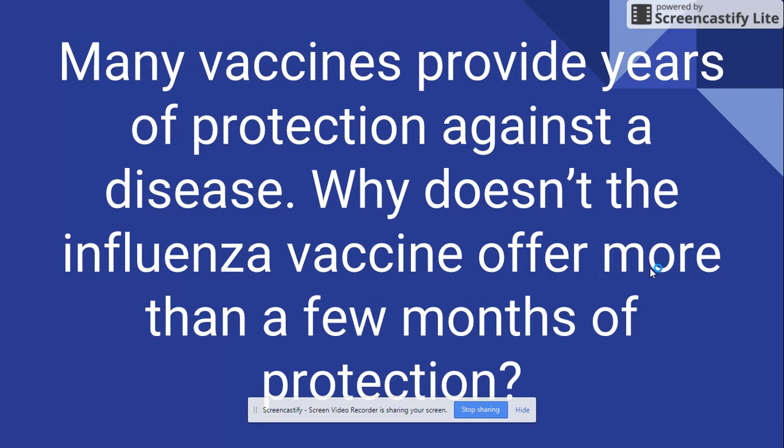Most vaccines provide protection for years to come and you only need one shot. For example, the polio vaccine — you get it as a kid and never need it again. So why do you have to get the flu vaccine every year? Because the flu virus is one of those viruses that can change the way it looks on the outside. If it changes its surface antigens, your body won't recognize it, and you need a new vaccine so your body can identify it as a threat. That's why the flu vaccine is given every single year.